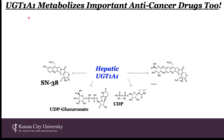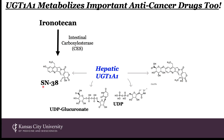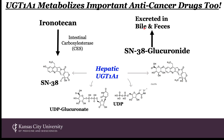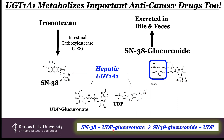These enzymes have broad substrate selectivity. For example, irinotecan is worked on by intestinal carboxyl esterase to produce SN-38 — irinotecan is a pro-drug converted to the active form, which is then acted upon by hepatic UGT1A1 to produce the glucuronide, which can be excreted in bile and feces. SN-38 plus UDP glucuronide produces SN-38 glucuronide plus UDP. This is how glucose gets stuck on drugs, rendering them substrates for drug transporters so they are excreted in bile and feces.